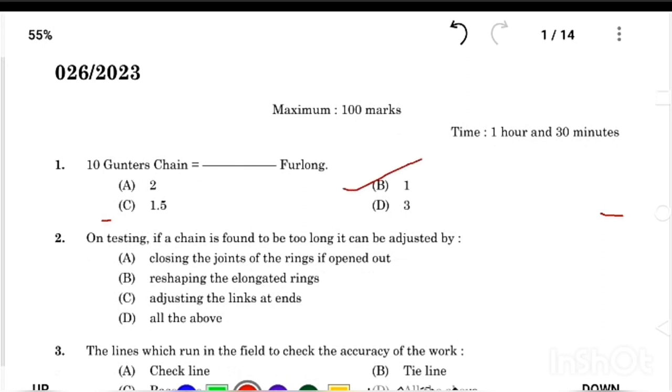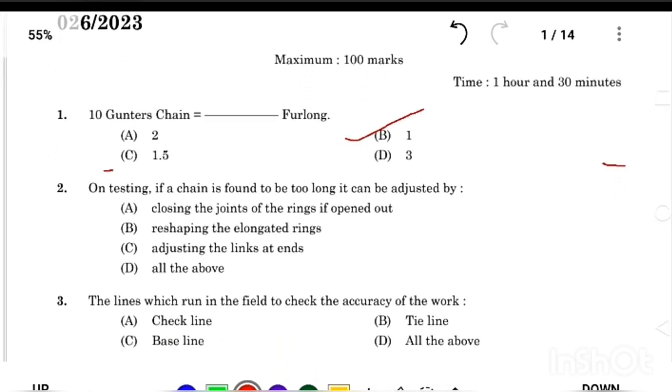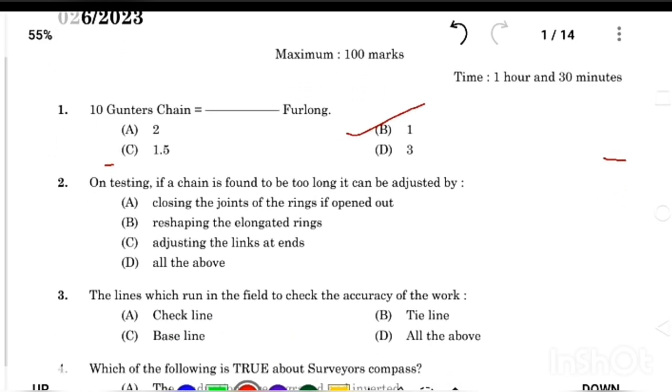On testing, if a chain is found to be too long, it can be adjusted by Answer Option D, all the above.